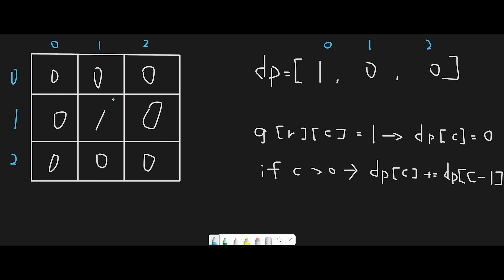Let me explain with this example — I copied the array from example 1. To solve this question, I use dynamic programming. I initialize a dp list with all zeros, and the dp length should be the number of columns, which is 3 in this case. I already update the first position with 1. This dp list represents the first row initially — position (0,0), (0,1), and (0,2).